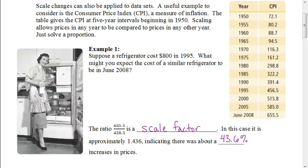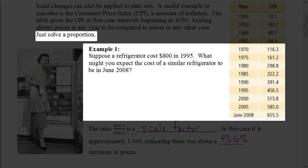Here it says, suppose a refrigerator costs $800 in 1995. What might you expect the cost of a similar refrigerator to be in June of 2008? Over here on the right, they have our CPI values for different years, starting with 1950. For every five years, they give us that data. Now, the key here is in this last sentence. In order for us to be able to figure this out, we're going to solve a proportion.